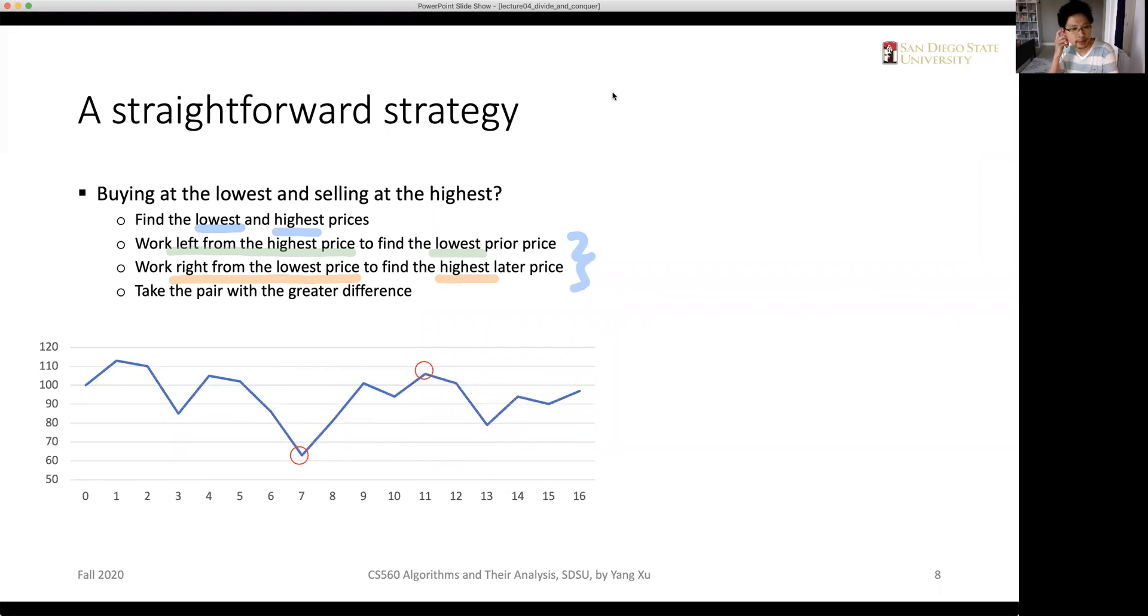So for example, in the data set here, we can first spot the lowest points and the highest points. In this example, we first find the lowest points, which is the bottom here. So this is the lowest points. And we work right from the lowest price and find the highest later price, which is here. So this is indicated by the second strategy here.